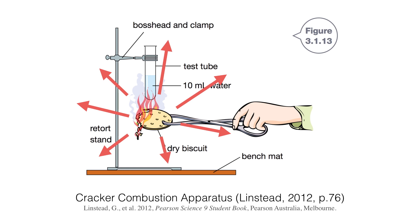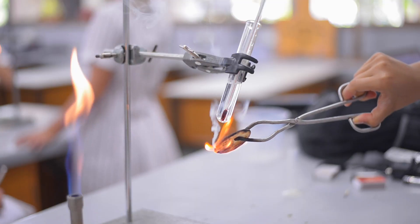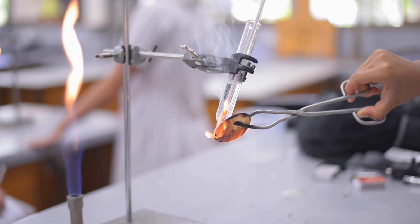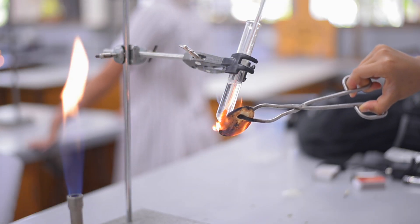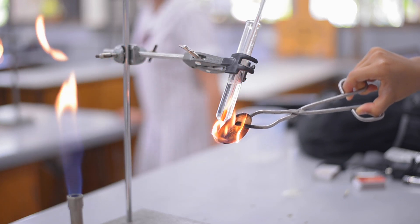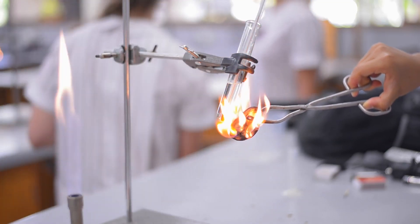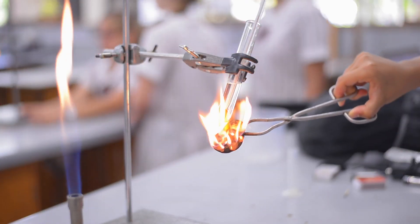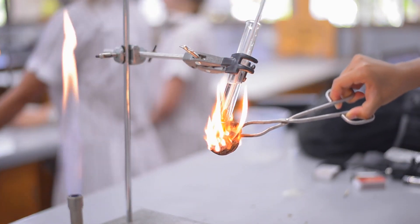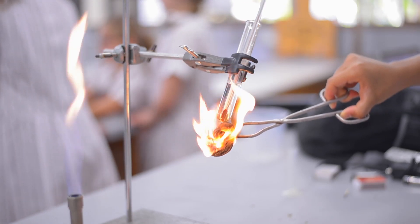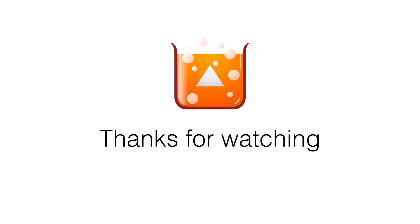We also have situations where the students operating the tongs and cracker weren't very coordinated. The flame wasn't always underneath the test tube 100% of the time—sometimes left, sometimes right, sometimes in the middle. So not all the energy released by the cracker was captured and absorbed into the test tube. That's all for today. Thanks for watching.